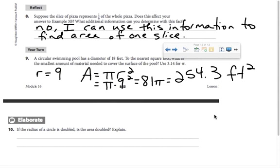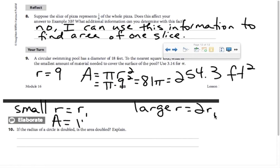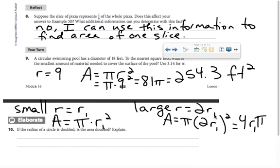If the radius of a circle is doubled, is the area doubled? Okay, so here's small. Let's make the small radius r1 again. And the large radius would be 2 times that. So that's 2r1. And that means this area would be pi times r1 squared. The larger one would be pi times 2 times r1 squared. So that would be 4 times r1 times pi. Which means, no, the area would not be doubled. It would be quadrupled.